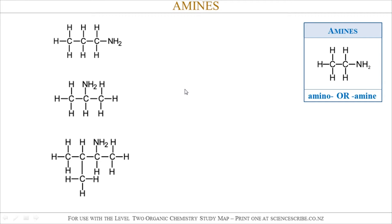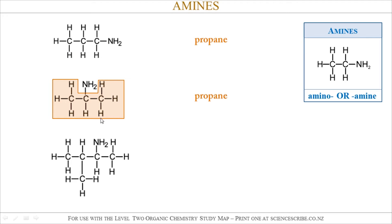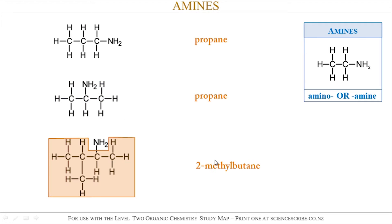To name the amine molecules I'm going to look at the alkane part of the molecule first, shown using an orange highlight. In the first one the alkane part is called propane. In the second one it's also propane, but in the third one it's called 2-methylbutane.